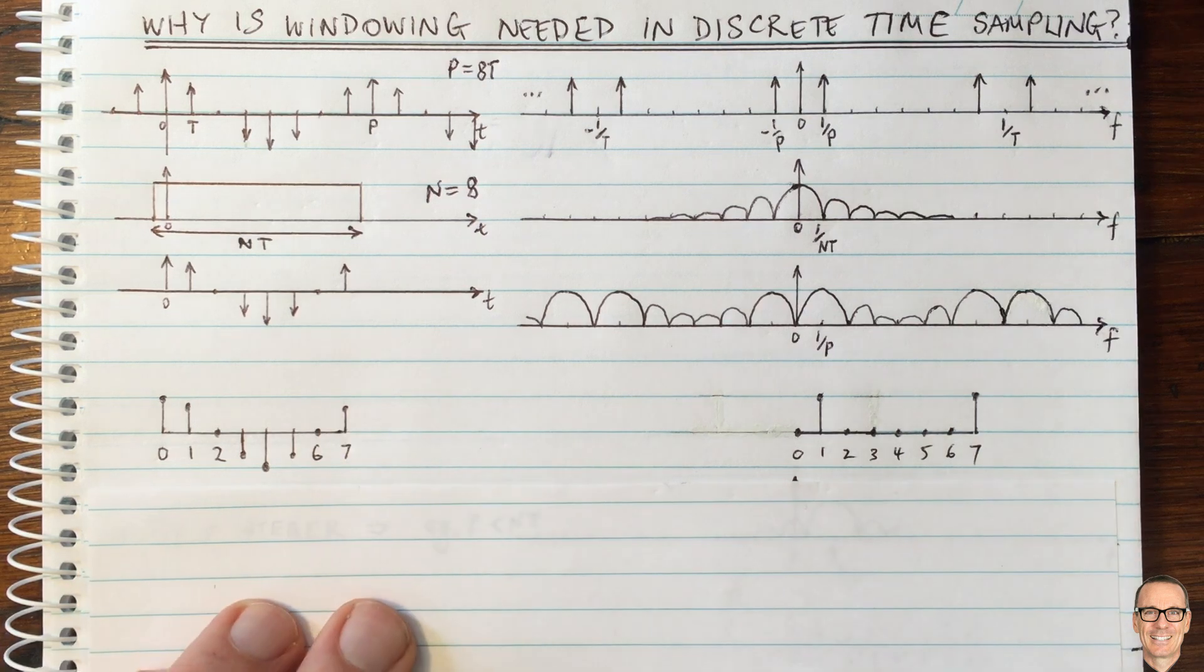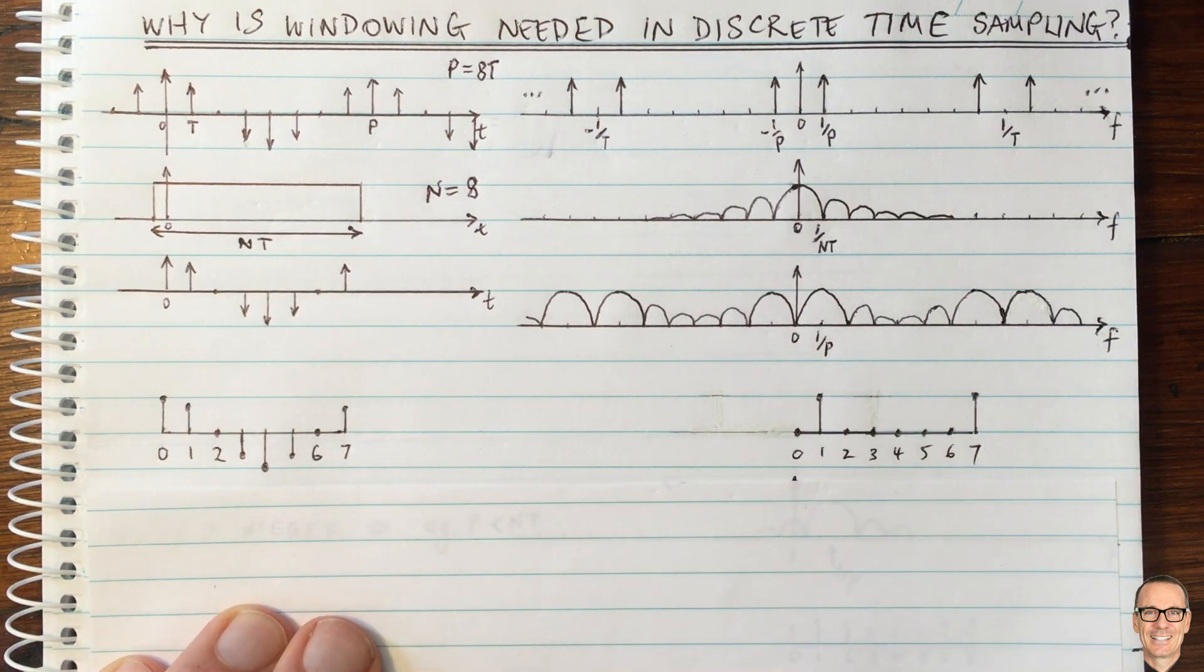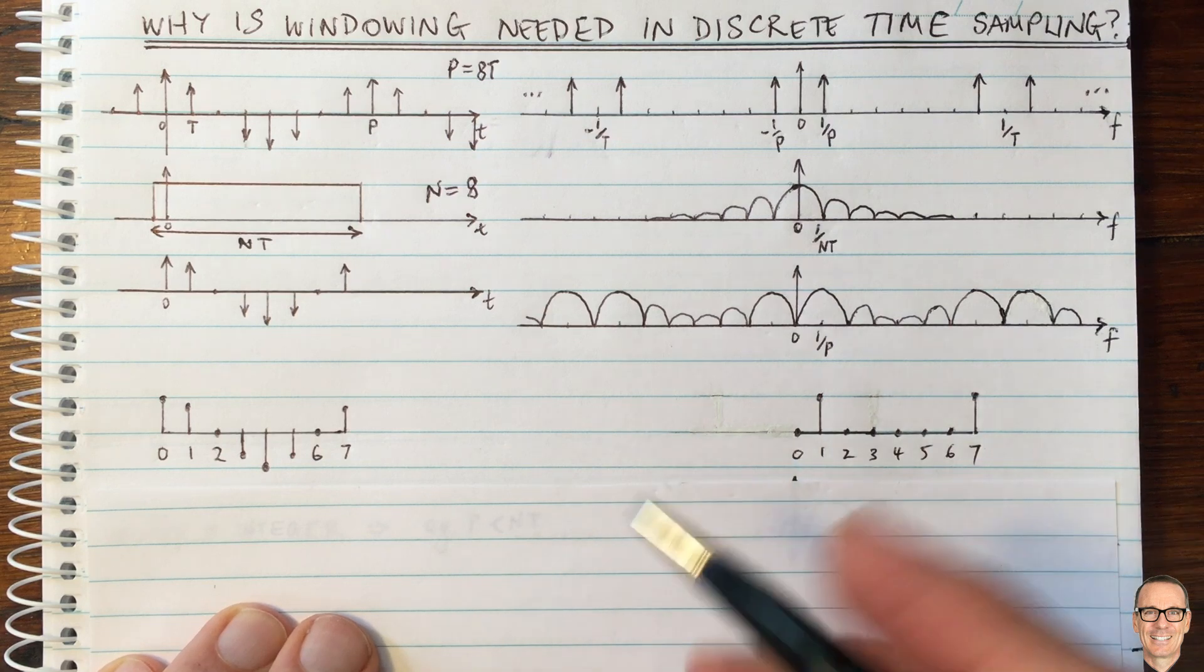That's a very important difference between the discrete time and the continuous time. So what do we have in the frequency domain?